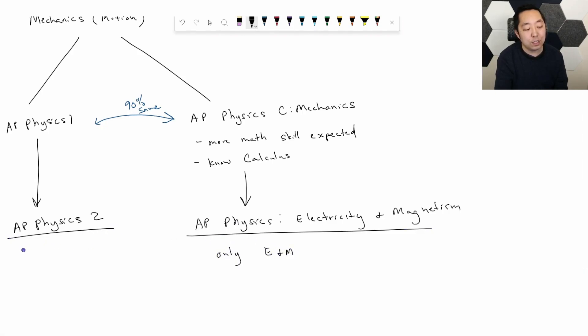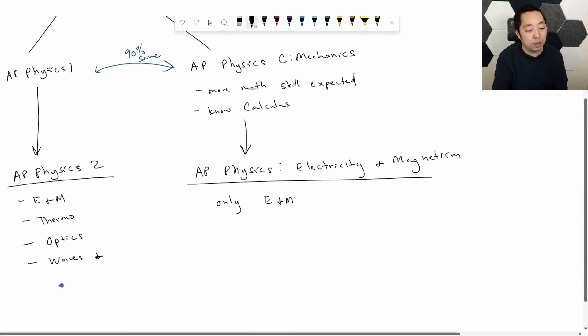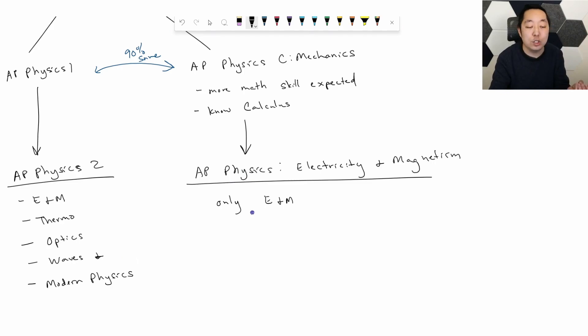Whereas in AP Physics 2, you do learn E&M, but you also learn thermodynamics, you will learn some optics, this is about light, you'll learn some waves, and then you will also learn some modern physics topics. So these topics here, these two are the same, but all of these are extra. Now, you might be like, well, does that make this an easier class? No, no, no, no.